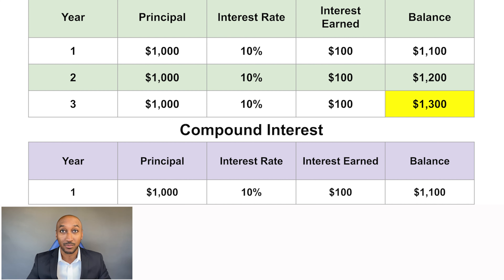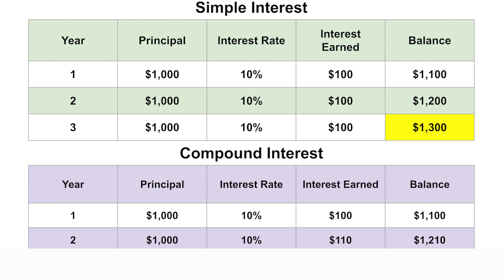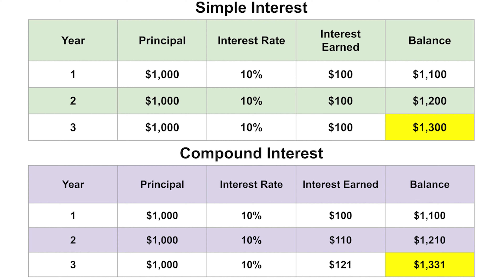Now when it comes to compound interest, it's a little different. In year one you have that same $1,000, you make 10%, which is $100, and your balance is $1,100. Now in year two, you'll still earn 10% on that original $1,000 that you invested, but you'll also earn 10% on that $100 that you earned the previous year. Meaning now you're earning interest on $1,100 for the second year.